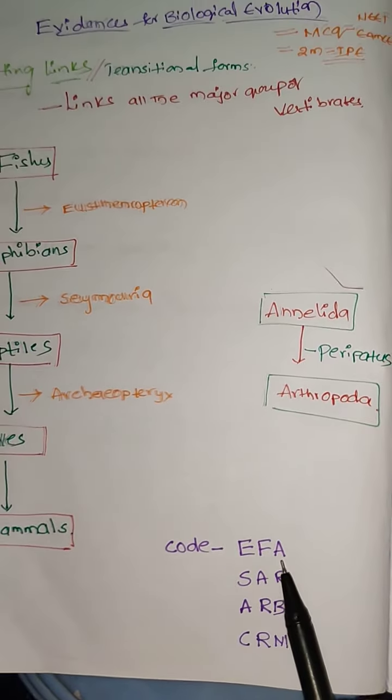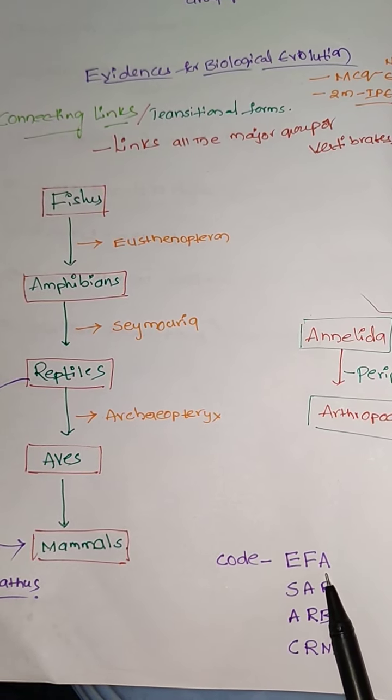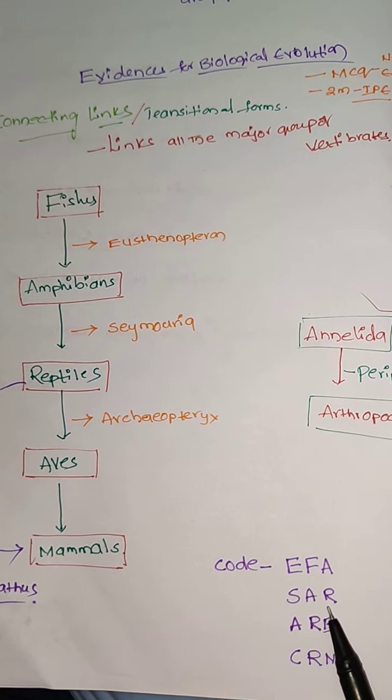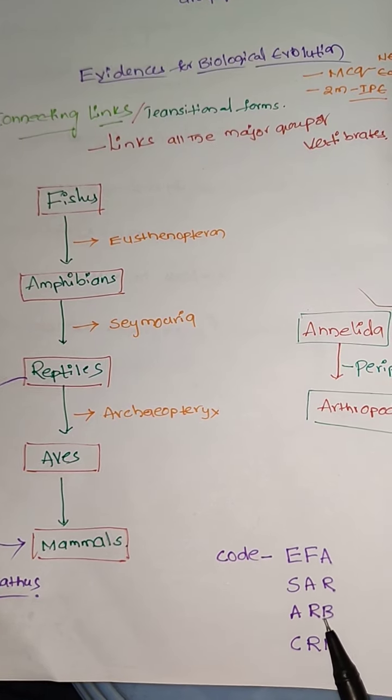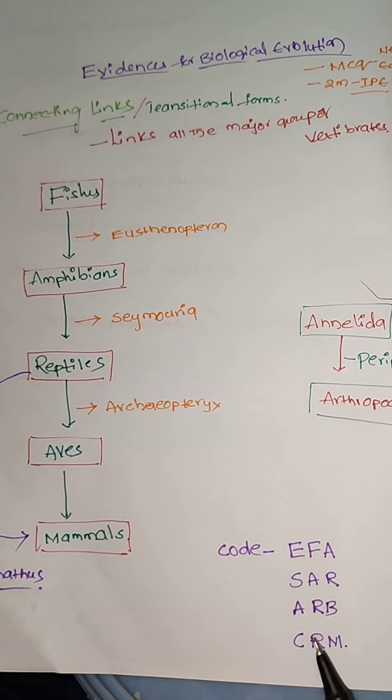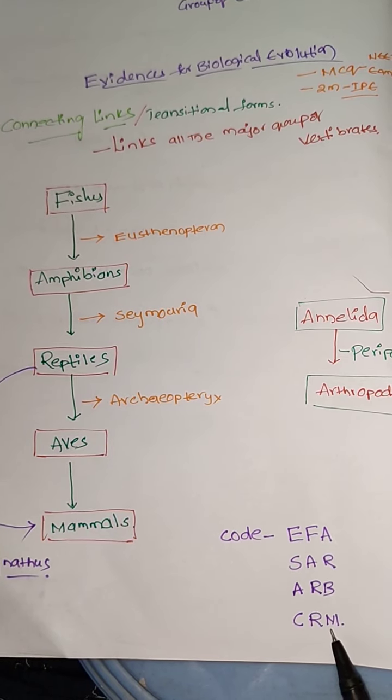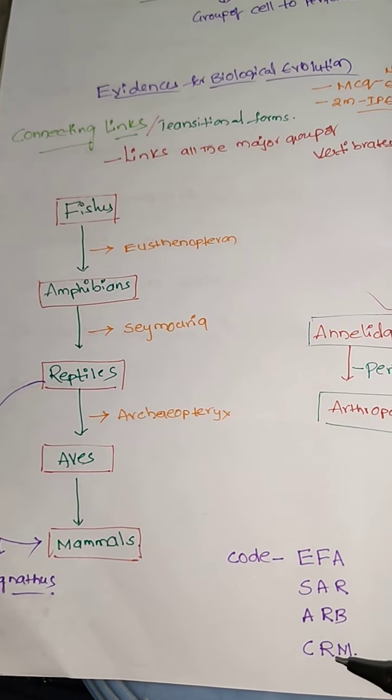Here the code EFA SAR ARB CRM. Here E means Eusthenopteron between fishes and amphibians. Then Seymourua between amphibians and reptiles. Then Archaeopteryx between reptiles and birds. Birds nothing but aves. Then Cynognathus is connecting link between reptiles and mammals. These all are the vertebrate connecting links.